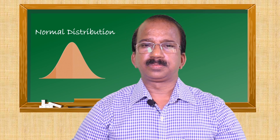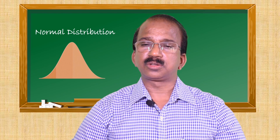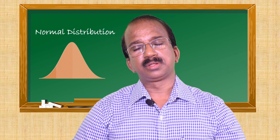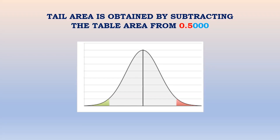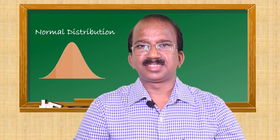Now if you want to find the tail area — that is, on either side beyond a certain value, for example in the positive side beyond a certain value or in the negative side less than a certain value — you have to subtract the table value from the area of that side, which is 0.5. Subtracting the value from 0.5 gives you the tail area of the normal curve.